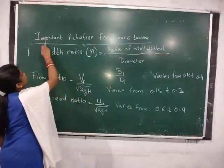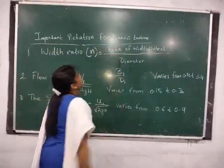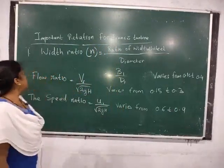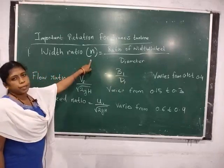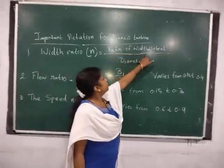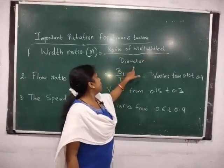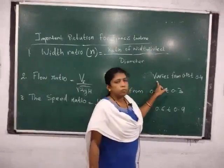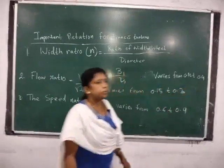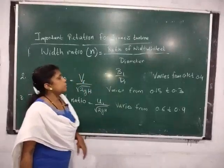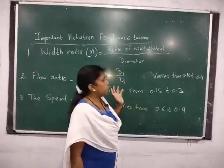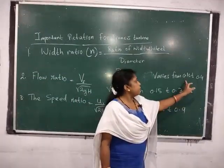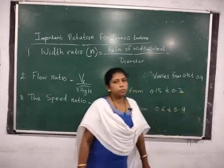Here are some important relations for Francis turbine which will help you solve problems. First is the width ratio, denoted by N, which is the ratio of the width of the wheel divided by the diameter, that is B1 by D1. This value varies from 0.1 to 0.4. If given in the question, use it to find the diameter; if not given, take a value between 0.1 and 0.4.